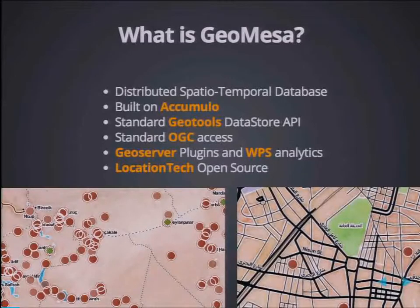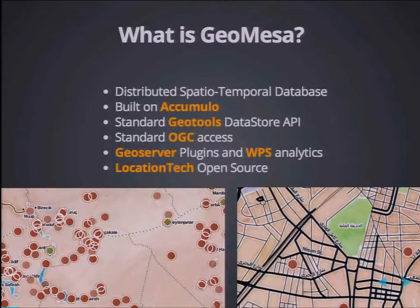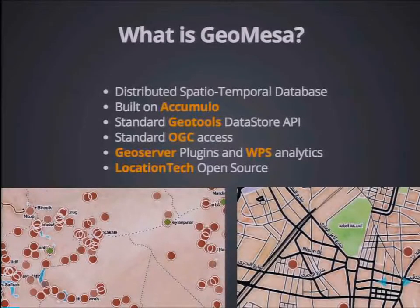GeoMesa is a distributed spatiotemporal database. In particular, it's built on the Accumulo column family database. But more importantly, the goal of GeoMesa is to be a runtime-only dependency of projects. It implements the standard GeoTools Datastore API, and also exposes data in these distributed databases via standardized services like OGC that we expose via GeoServer plugins. The point being that you should never have to import a GeoMesa class into your application — just import the relevant GeoTools interfaces and work with those directly. The geospatial computations are transparently executed on the cloud.